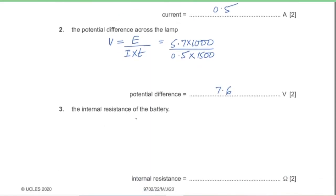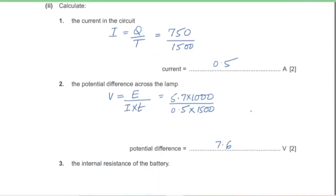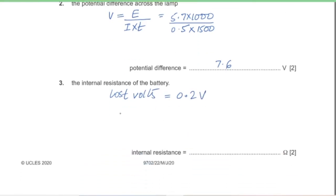Calculate the internal resistance. EMF = 7.8 V, PD = 7.6 V, so lost volts = 7.8 − 7.6 = 0.2 V. Internal resistance = voltage / current = 0.2 / 0.5 = 0.4 Ω.